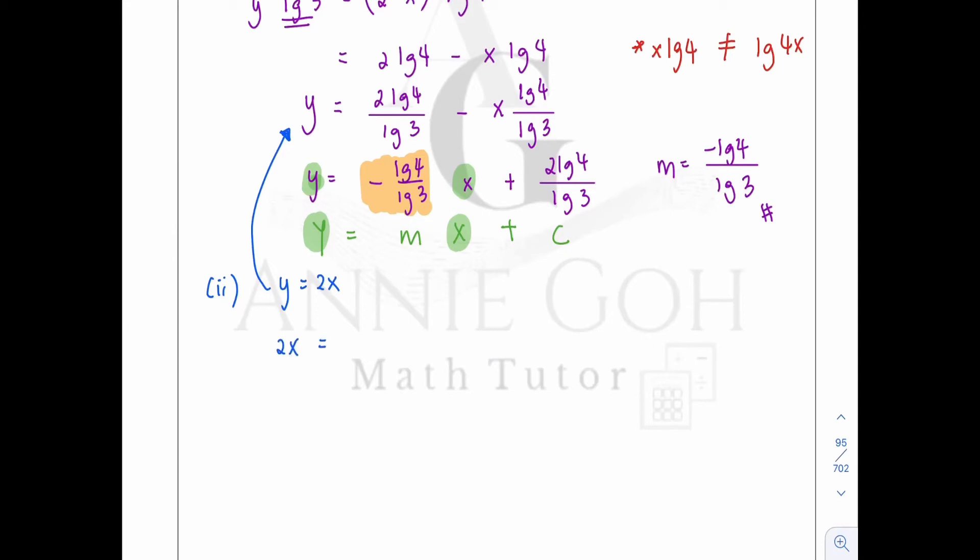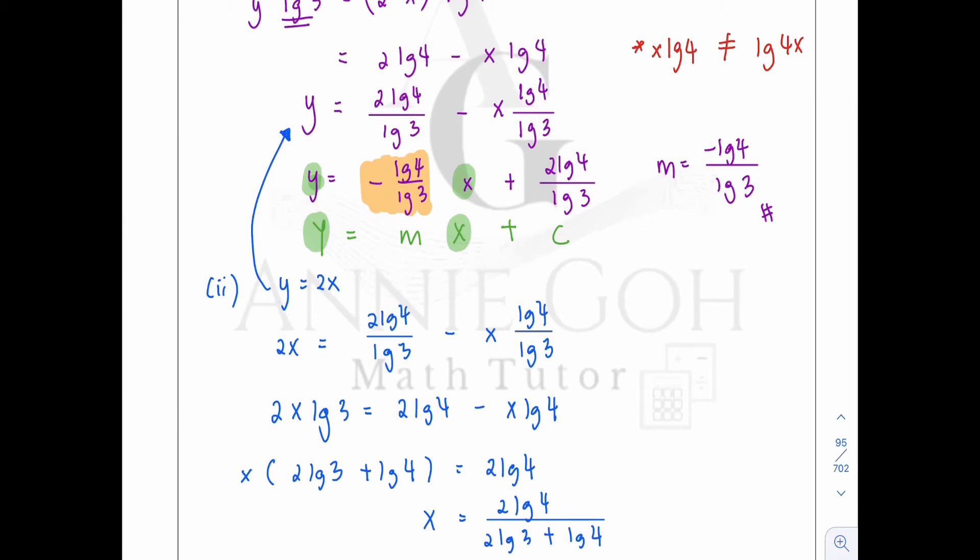So 2x should be equal to 2 log 4 over log 3 minus x log 4 over log 3. To be easier, you just multiply every term by log 3. So it becomes 2x log 3 equals 2 log 4 minus x log 4. And then just group the x terms together and factorize the x. And hence, you get 2 log 3 plus log 4 equals 2 log 4. And hence, x is equal to 2 log 4 over 2 log 3 plus log 4. And according to the question, you are asked to simplify your answer.